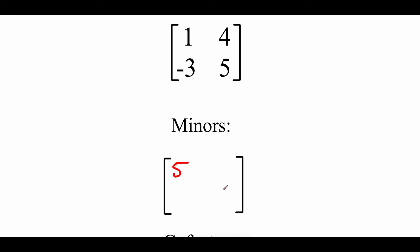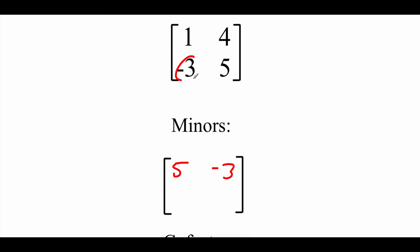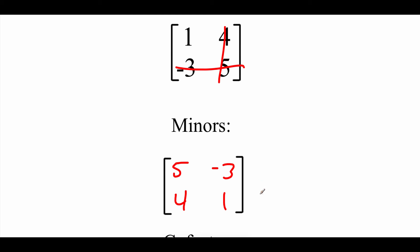For the first row, second column entry — that's the 4 — we cross off the first row and second column. We do the determinant of the matrix that has just negative 3 as its entry, so we get negative 3. Moving down to second row, first column, we cross those off and the determinant of that 1x1 matrix is just 4. Then second row, second column — cross those off, and what's left over is 1.